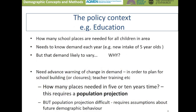Thinking about the policy context, planners need to know how many school places are needed for children in a particular area. That relies on demand each year — the size of the new intake of five-year-olds. Demand may vary because of changes in numbers of children women are having, or the size of the cohort at childbearing ages. Crucially, we need advanced warning of changes in demand to plan for teacher training, school building, or closure of schools in areas of declining child populations. These projections require us to make assumptions about future demographic behaviour.